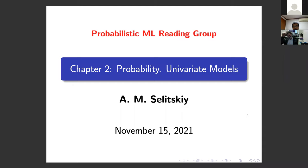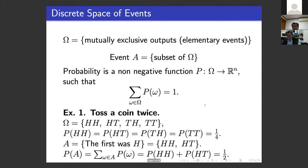Because we will talk about probability, I found it important to introduce definitions. We will go through two definitions: the notion of events and the notion of random variables. Let's start from events. Omega denotes the set of mutually exclusive outputs.